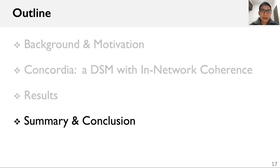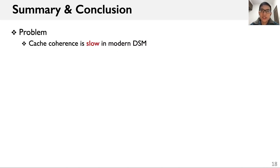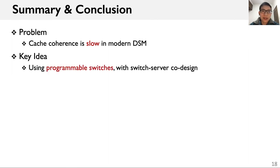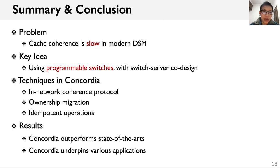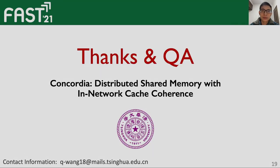Finally, a brief summary and conclusion: cache coherence is slow in modern DSM due to expensive coordination. In this paper, we argue that using programmable switches can mitigate coherence overhead, and we build Concordia with three key techniques. Evaluation shows that Concordia outperforms state-of-the-art systems and can underpin various applications. Thank you for listening.